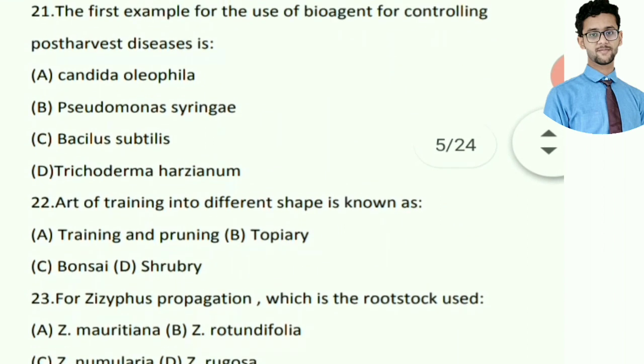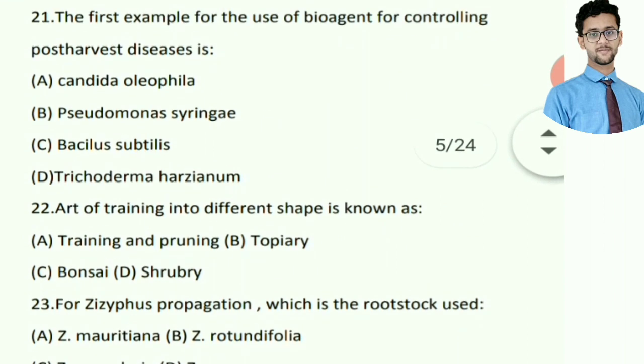The first example for the use of a biological bioagent for controlling post-harvest diseases — right answer is C: Bacillus subtilis.